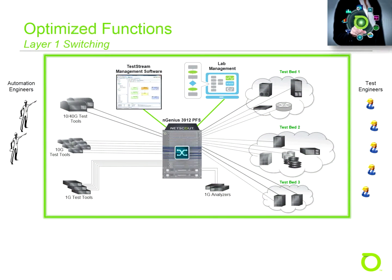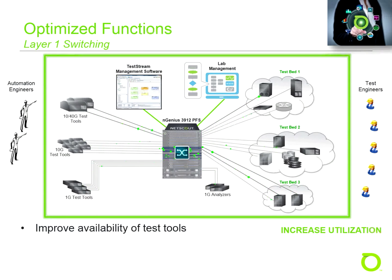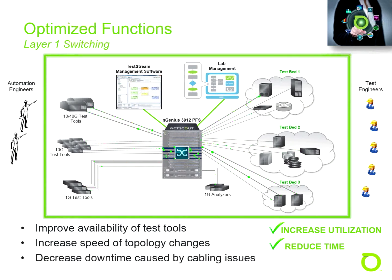First, we have Layer 1 switching. Layer 1 switching enables lab managers to quickly build test topologies from pooled resources, greatly improving the availability of test tools and increasing the speed of topology changes. Since all configuration changes are done remotely via automation software, downtime caused by failed cables and dirty connectors is nearly eliminated. Automating Layer 1 switching is a critical component of any lab automation effort where test tools are shared or network topologies are changed across test cycles.